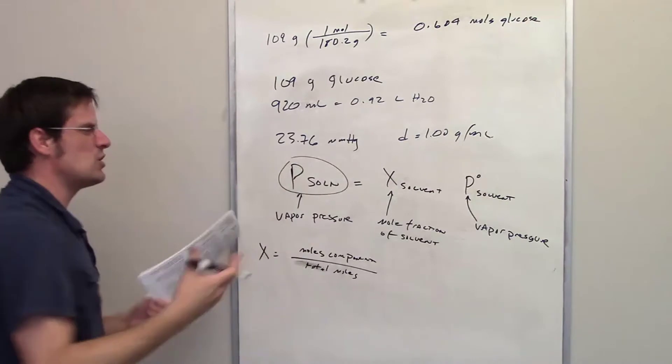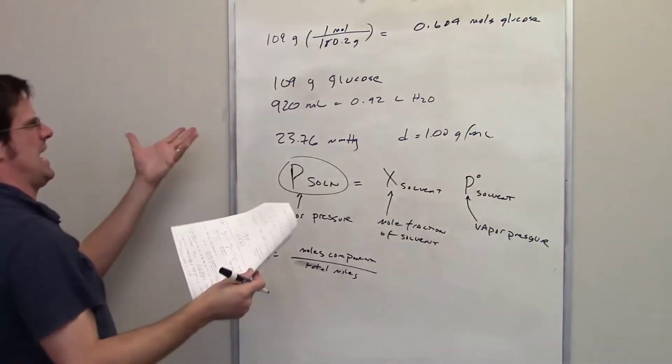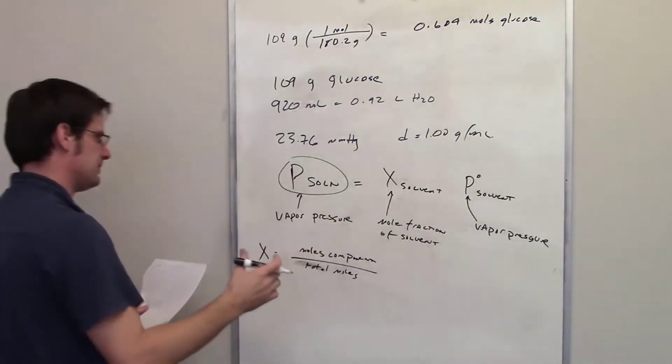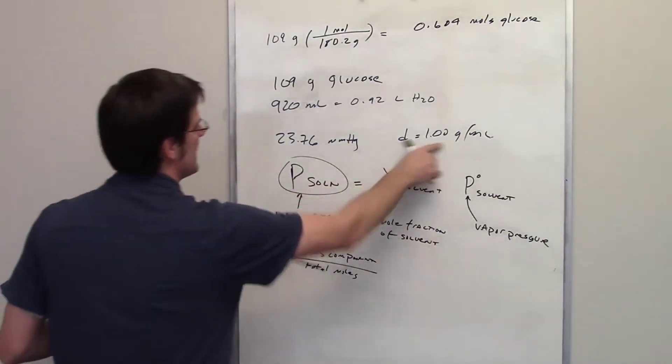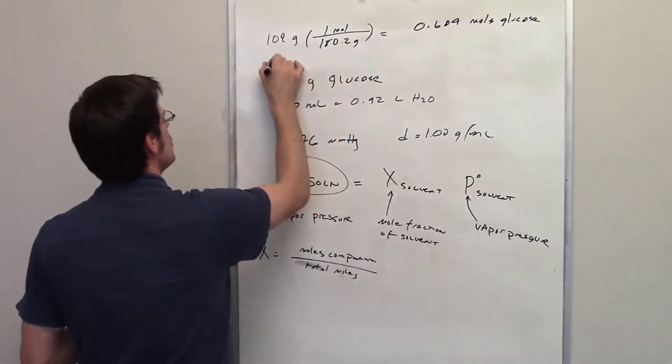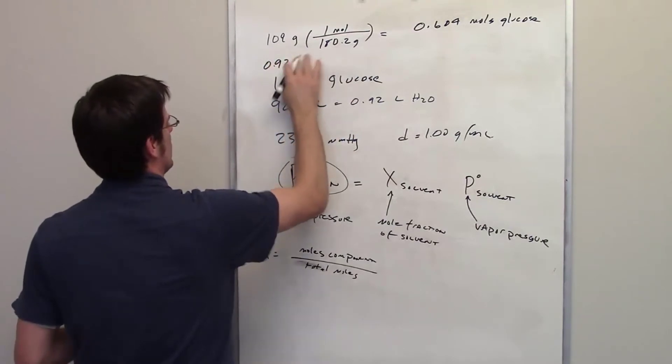We now have 0.92 liters of water. How many moles is that? How do you determine that? Well, you're going to have to use density. So I'm going to write 0.92 liters.